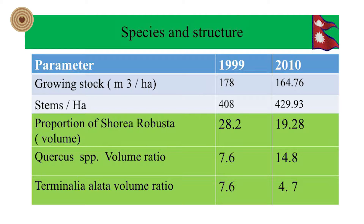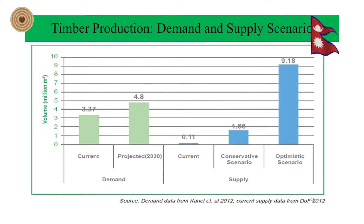As my colleague presented, the most common species are Shorea robusta, Quercus, Terminalia, and Pinus roxburghii. Regarding timber wood, the growing stock as of 2059 BS was 178, and it now stands at 164.76 cubic meters per hectare. On demand and supply: the current supply scenario is very low in the conservative scenario, with an optimum scenario projected higher, measured in million cubic meters.